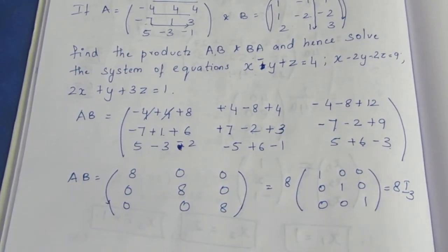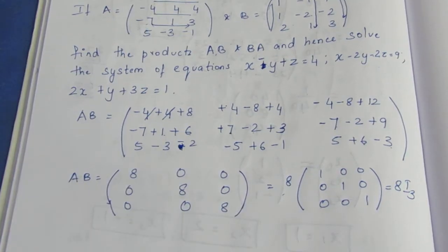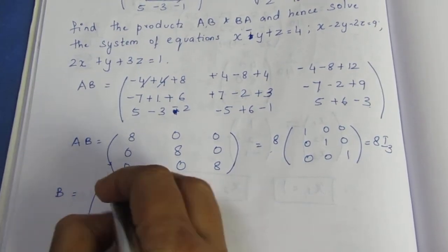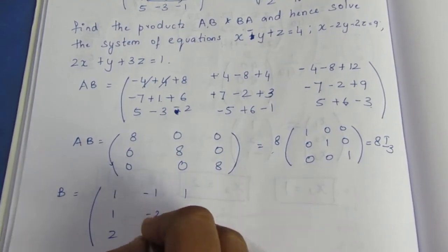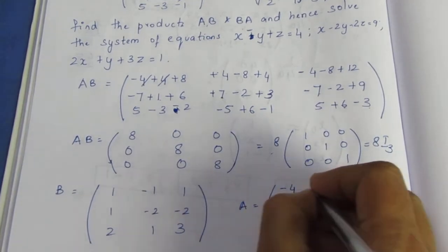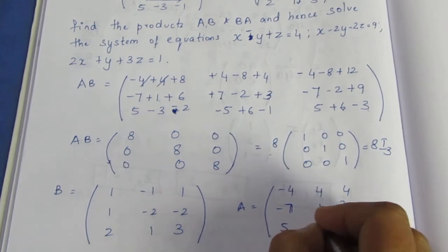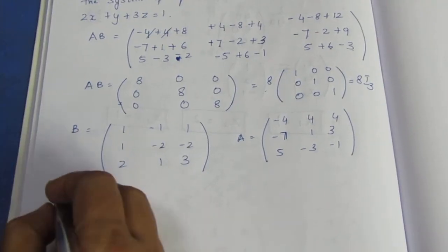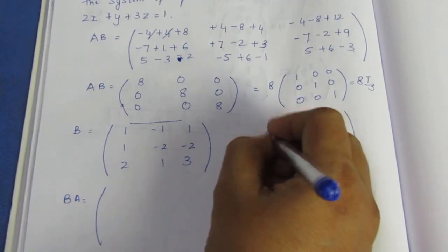So AB equals 8·I₃. Since AB equals BA, BA is also equal to 8·I₃. Now let's verify by computing BA. B has rows: 1, minus 1, 1; then 1, minus 2, minus 2; then 2, 1, 3. A has rows: minus 4, 4, 4; then minus 7, 1, 3; then 5, minus 3, minus 1. Now BA — first row, first column: minus 4 plus 7 plus 5.